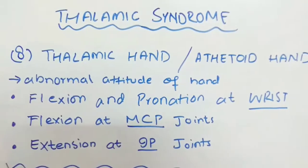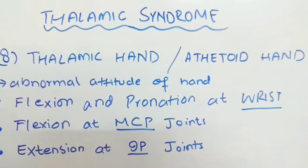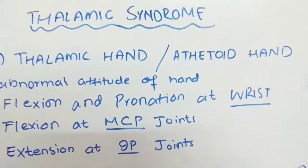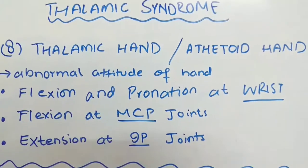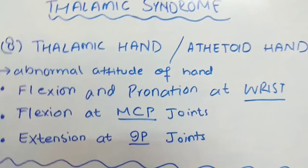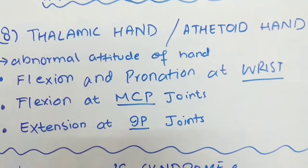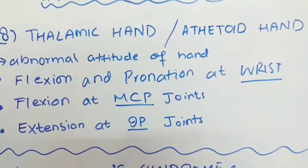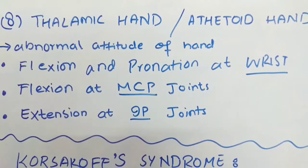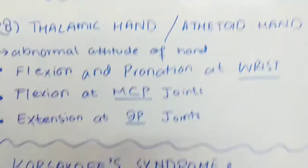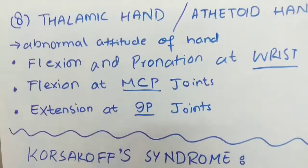The eighth symptom of thalamic syndrome is thalamic hand, also called athetoid hand. This is an abnormal attitude of the hand in thalamic lesion. The hand shows abnormalities like flexion and pronation at the wrist, flexion at the metacarpophalangeal joints, and extension at the interphalangeal joints.